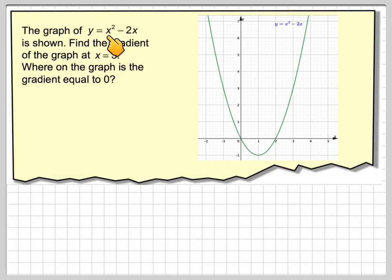The graph of y equals x squared minus 2x is shown. Find the gradient of the graph at x equals 3, and where on the graph is the gradient equal to 0.